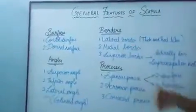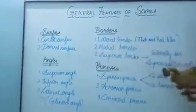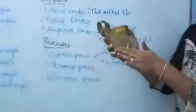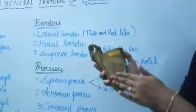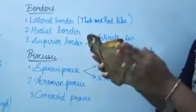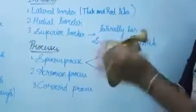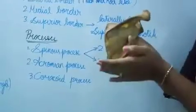There are two surfaces: the costal surface and the dorsal surface. The costal surface is concave in nature and it is also called the subscapular fossa. The dorsal surface is convex in nature.